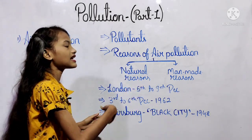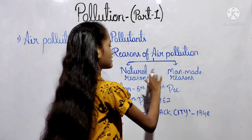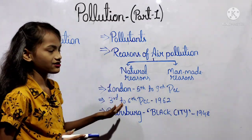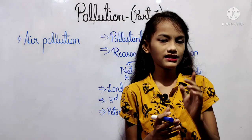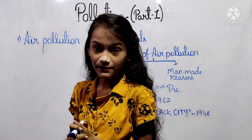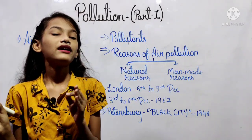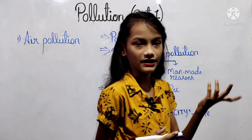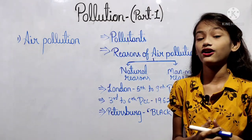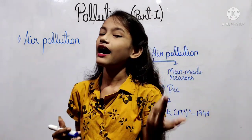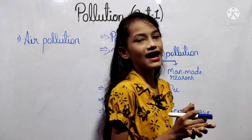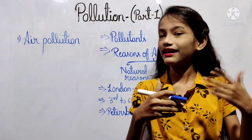The reasons of air pollution are first, natural reasons, and second, man-made reasons. The first natural reason is volcanic eruption — solid, liquid and gaseous materials emerge through eruptions, for example hydrogen sulfide, sulfur dioxide, carbon dioxide, ammonium chloride vapor, dust, smoke etc.